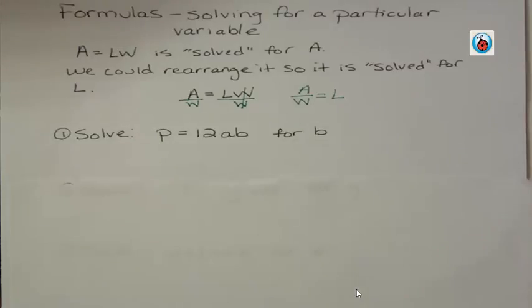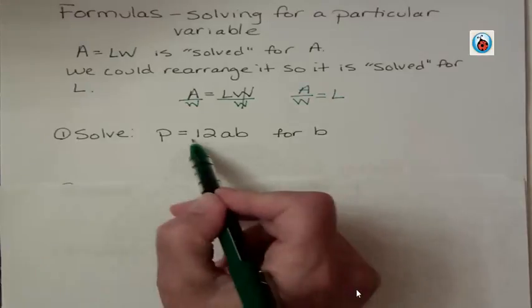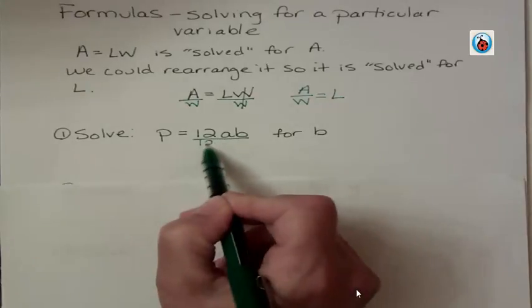Okay, let's say I have P equals 12AB and I want to solve that for B. What letter is it solved for right now? Well, P, that's the variable that's by itself. So we want to get rid of what? We want to get rid of 12 and A.